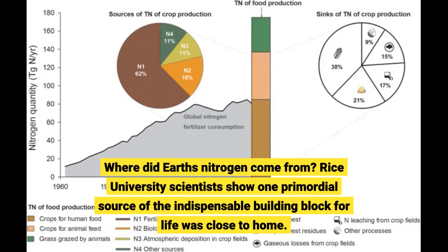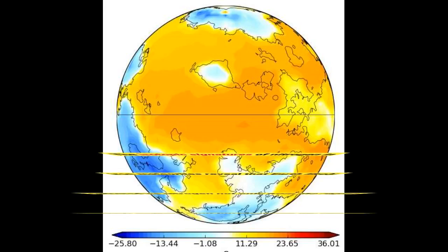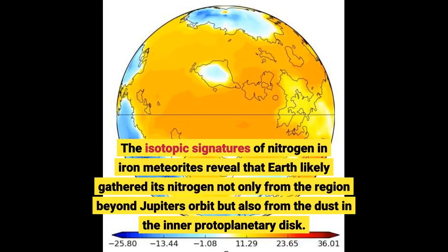Where did Earth's nitrogen come from? Rice University scientists show one primordial source of the indispensable building block for life was close to home. The isotopic signatures of nitrogen in iron meteorites reveal that Earth likely gathered its nitrogen not only from the region beyond Jupiter's orbit but also from the dust in the inner protoplanetary disk.